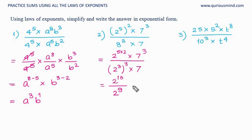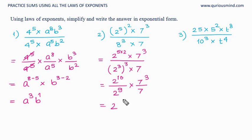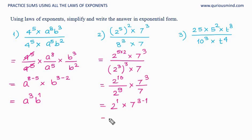2 raised to 10 divided by 2 raised to 9: base same, answers base same, 10 minus 9 which is 1, so 2 raised to 1. And for 7 raised to 3 upon 7 raised to 1: base is same, so the answer's base remains same, 7 raised to 3 minus 1 because it is division — so 3 minus 1 gives 7 squared. Final answer: 2 into 7 squared.